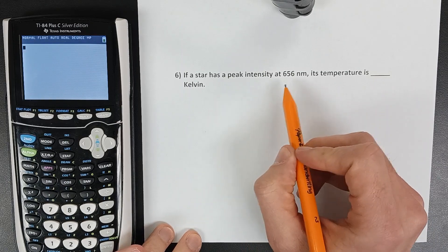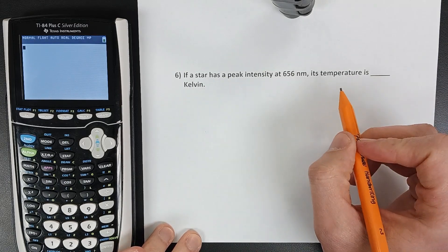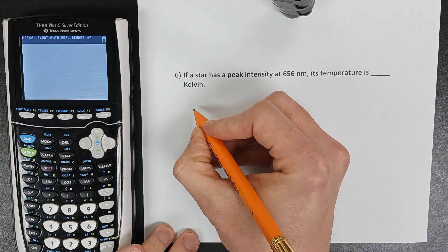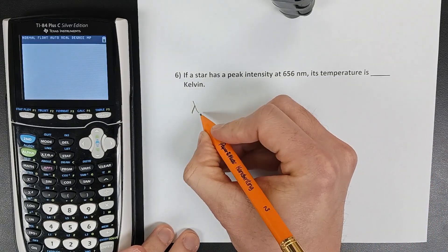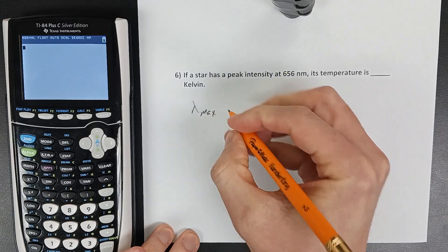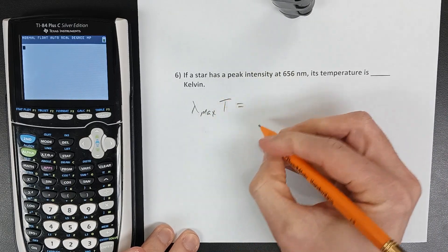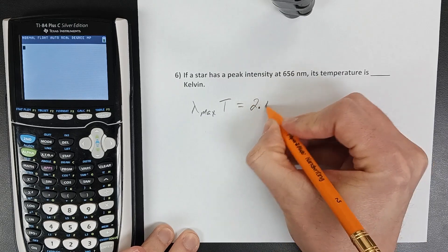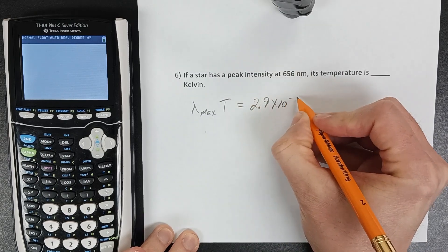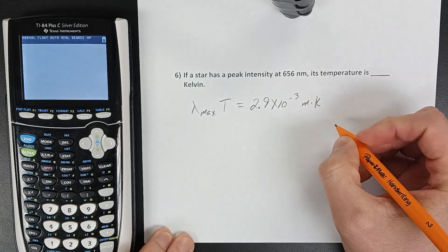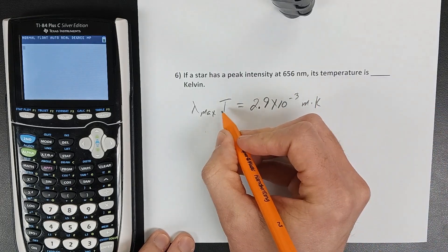In this problem we're given the peak intensity for a star and asked to solve for its temperature in Kelvin. Wien's displacement law says that the peak wavelength times the temperature, the surface temperature of an object, is going to equal a value of 2.9 times 10 to the negative 3 meters times Kelvin, and we want to solve for the temperature.